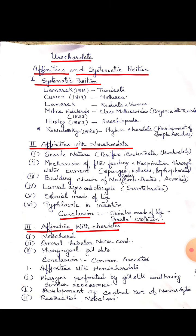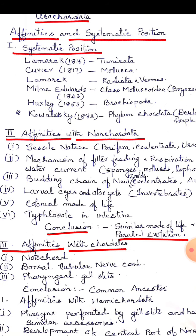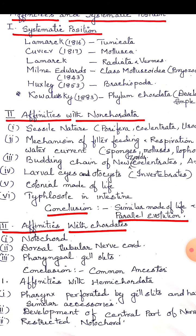Next, affinities with the hemichordates. The structural plan of the pharynx is perforated by gill slits and has similar accessory organs — this is shared with hemichordates. There is also similarity in the development of the central part of the nervous system.